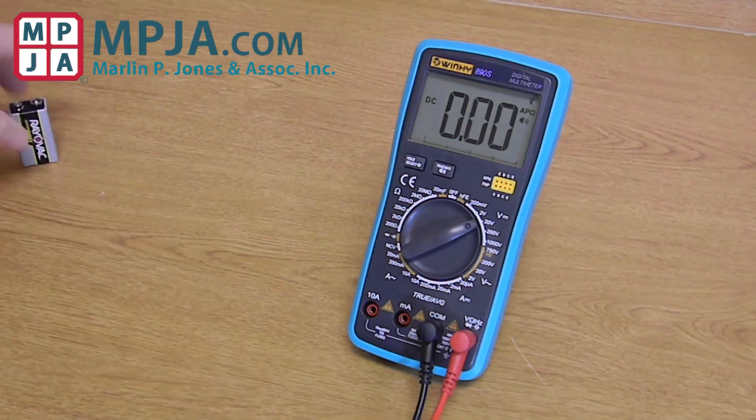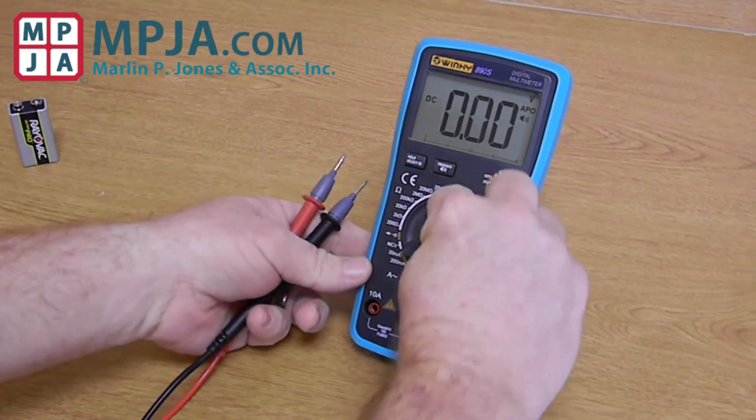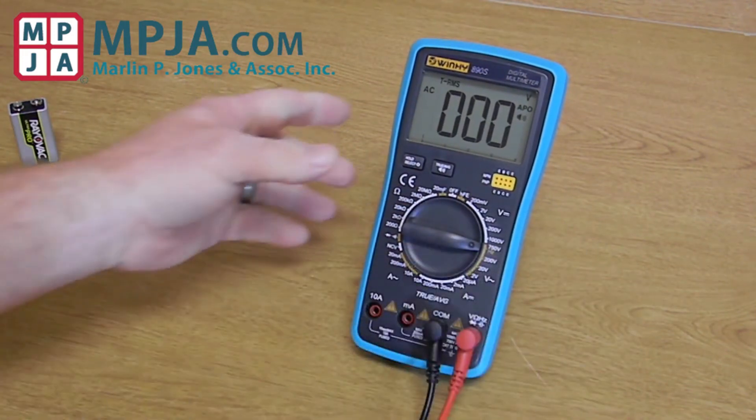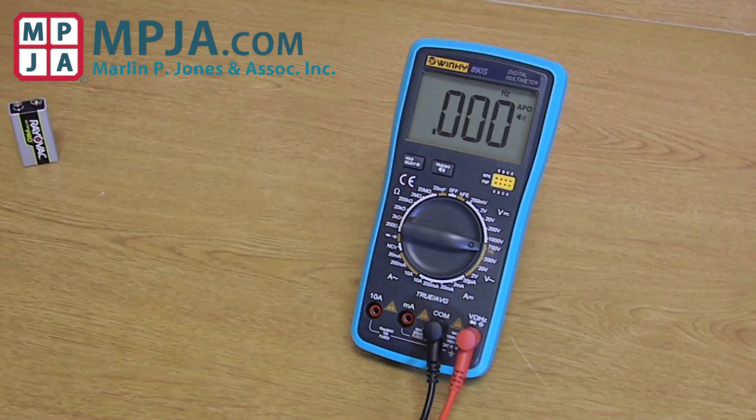Okay, then we move on to the AC section. You flip it to hertz and you press the hold button. Changes over to measuring hertz.